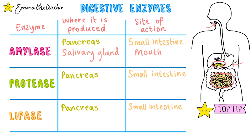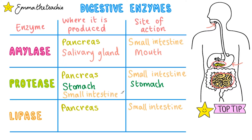Protease, on the other hand, is produced in the stomach, and therefore it also works in the stomach. It's also produced in the small intestines.